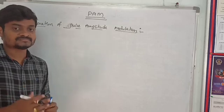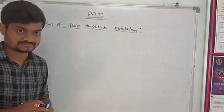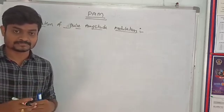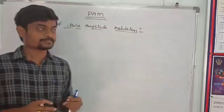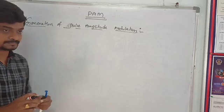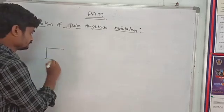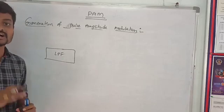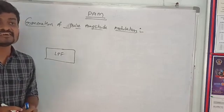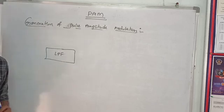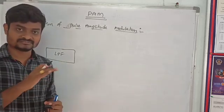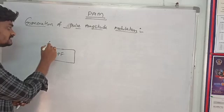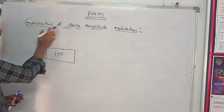Generation of Pulse Amplitude Modulation. In this we can use a Low Pass Filter, a Multiplier, a Pulse Generator, and a Pulse Sampling Network. The LPF — that means Low Pass Filter — removes all the frequency components which are higher than the frequency FM.